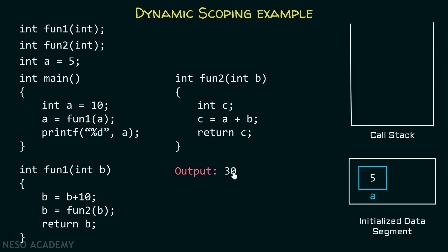As you can see, in the case of dynamic scoping the output is 30. And if you remember, in the case of static scoping the output was 25, because variable a takes the global value instead of the local value of main. This is the key difference between static scoping and dynamic scoping.